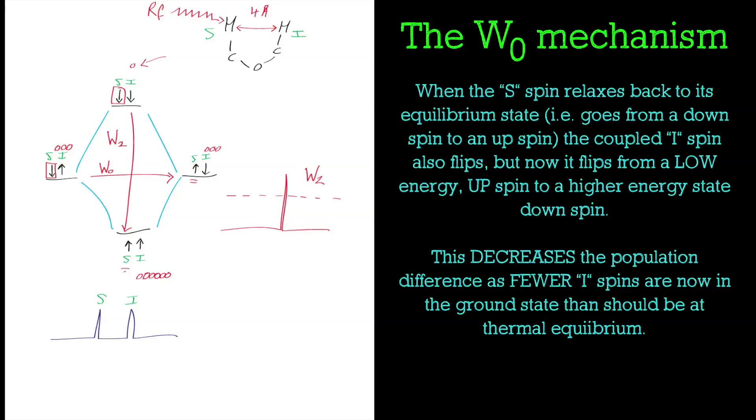If we look at the other pathway, the W0 transition, when the source spin flips to its ground state, the interesting spin is actually in its ground state, pointing up. When the source spin flips from its upper state to its ground state, the opposite happens to the interesting spin and it points down, going to a higher energy level. That actually decreases the population difference because it's taking something from the ground state to the upper state. The W0 or zero quantum transition event leads to a decrease in the signal intensity.